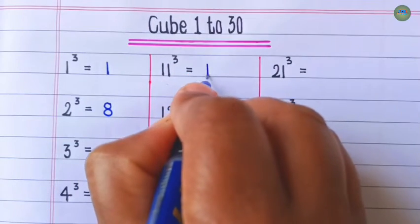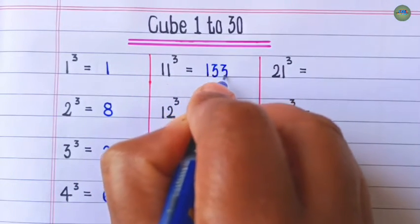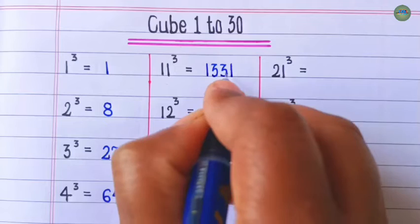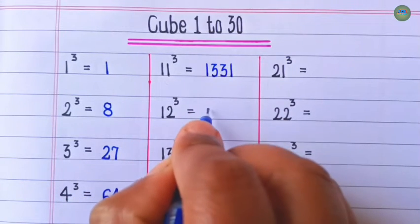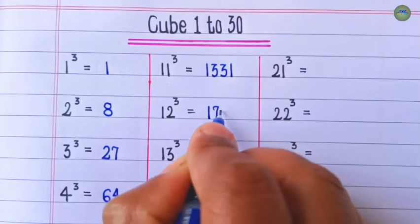Cube of 11 is 1,331. Cube of 12 is 1,728.